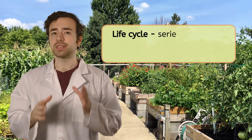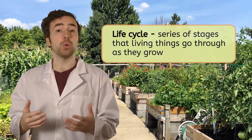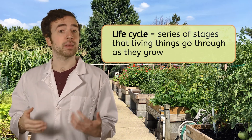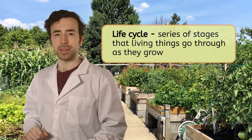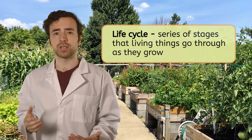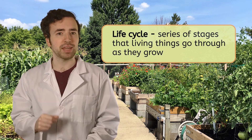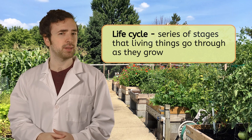The community garden is a great place to observe plants in different stages of their life cycles. A life cycle is a series of stages that living things go through as they grow. We'll start with flowering plants. Thinking back to what we know about flowers, what do you think the first stage of a flowering plant's life cycle is?